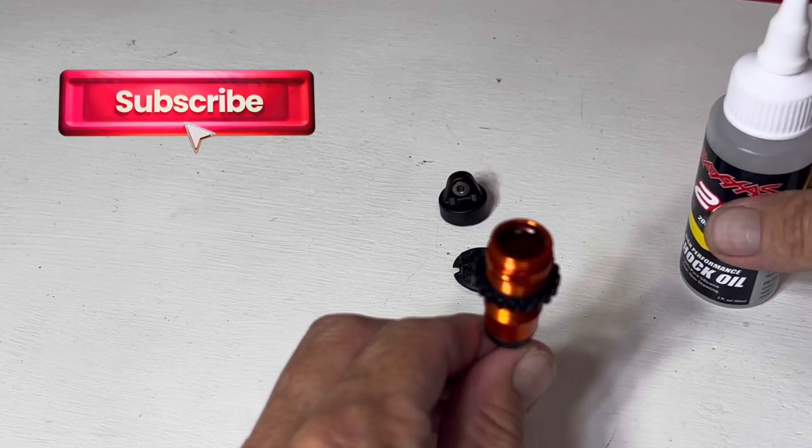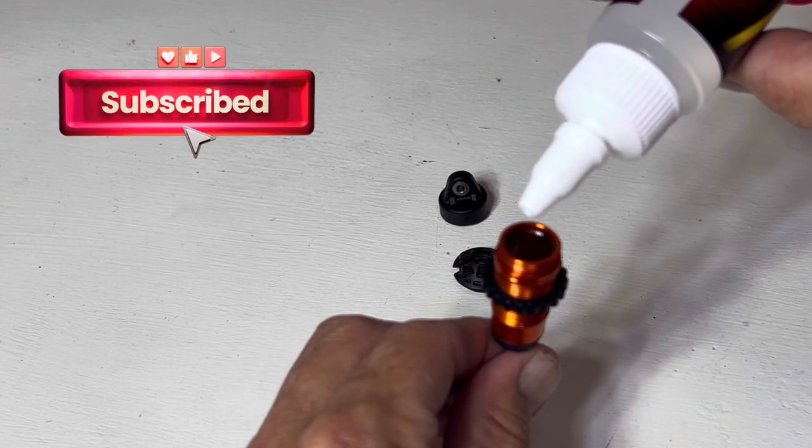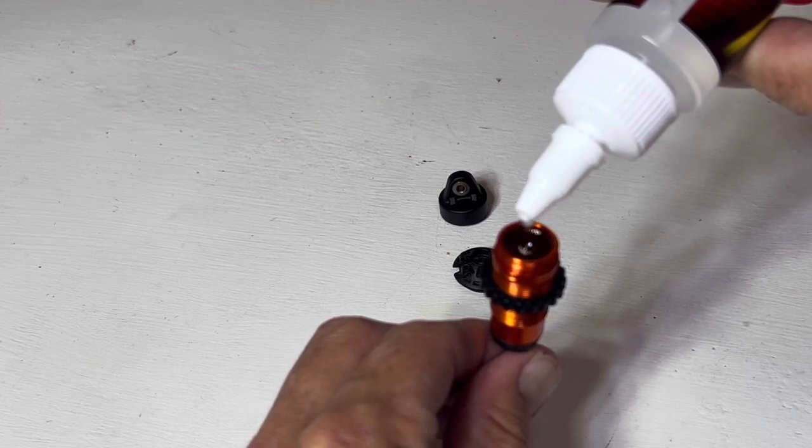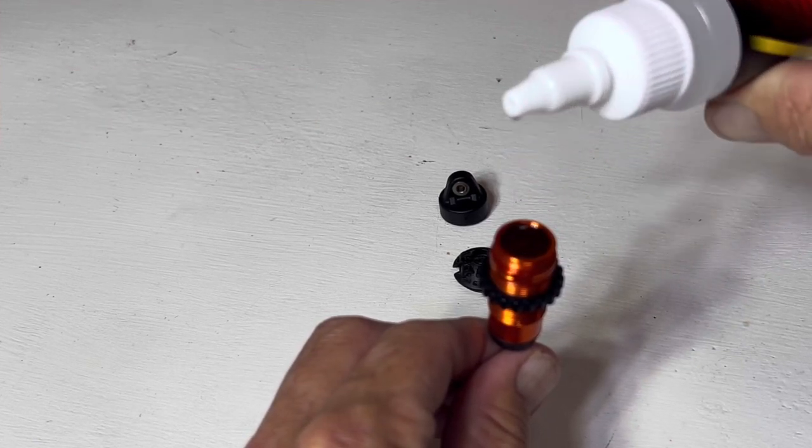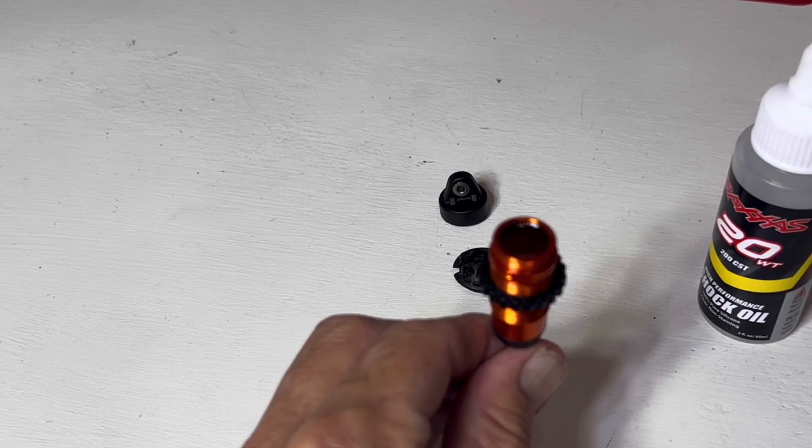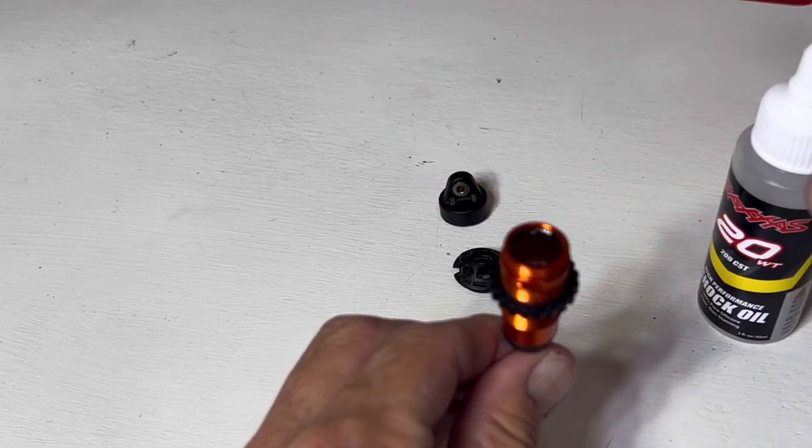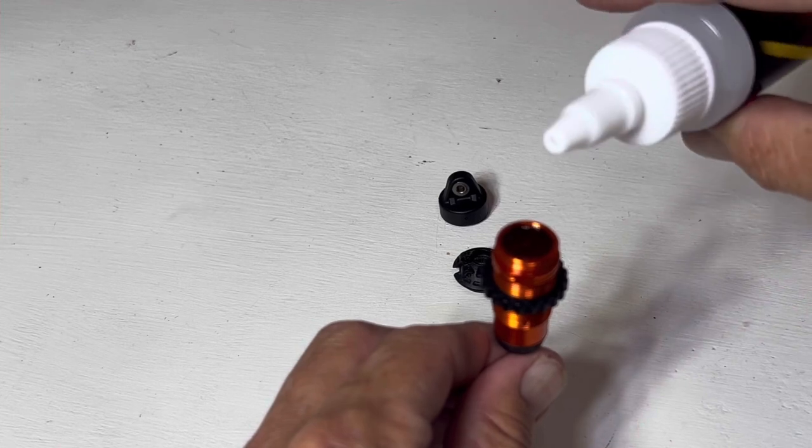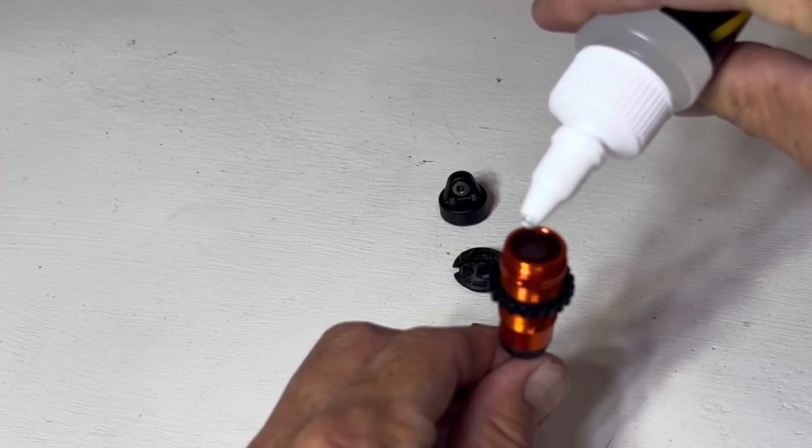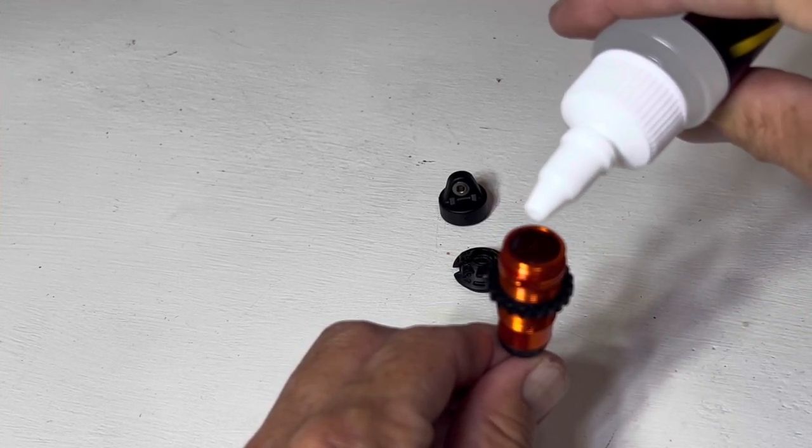So once you've got all those bubbles out, you're going to want to add a few more drops and get it right up to the top. And it's going to be hard to show you on the camera, but it's going to have a really nice concave look to it. Now it's going to leave just a little bit of room for that seal.